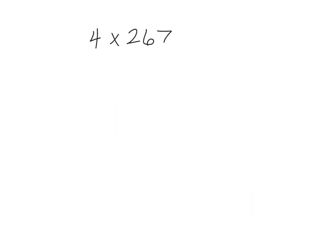All right, so we're going to use number disks to understand how to multiply 4 times 267. I'm not going to use the standard algorithm at all, just number disks at this point. The way we're going to think about it is I'm going to make a hundreds, tens, and ones chart.